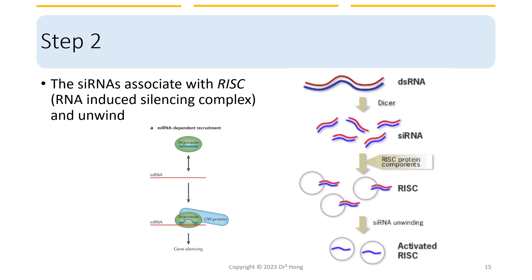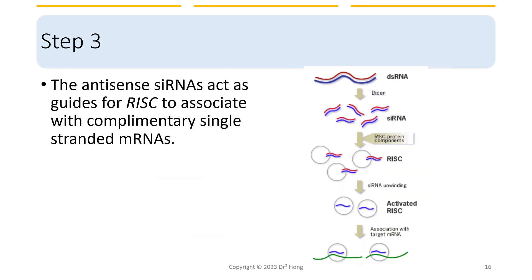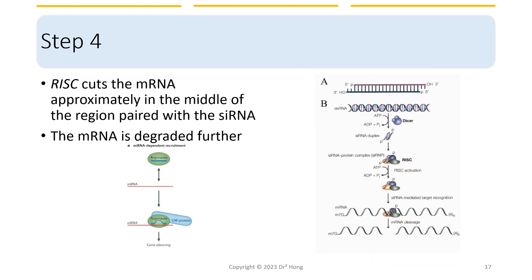One strand of the siRNA duplex is then loaded onto the RNA-induced silencing complex, commonly abbreviated as RISC, which consists of an Argonaute protein and other accessory proteins. The double-stranded siRNA is then unwound. The antisense siRNA serves as a guide for RISC, and the RISC complex binds to the target messenger RNA molecule that has complementary base pairing with the siRNA. Finally, the target messenger RNA is cut by the Argonaute protein, leading to its degradation and/or translational repression.